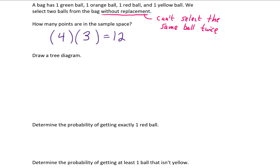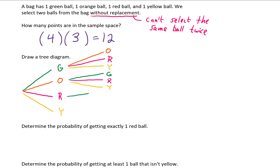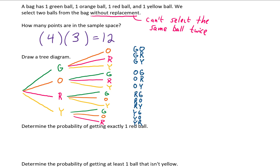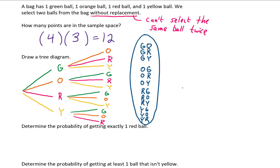Let's draw a tree diagram to visualize this sample space. Our first selection has four possible outcomes. If we select the green ball first, the number of options for a second selection is three: orange, red, and yellow. If we select the orange ball first, there are three possibilities for our second selection: green, red, and yellow. Continuing this gives us our completed tree diagram, and from this we can write out the full sample space showing all possible options for our two selections.